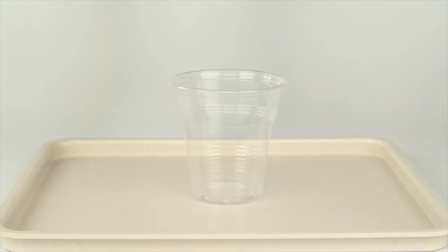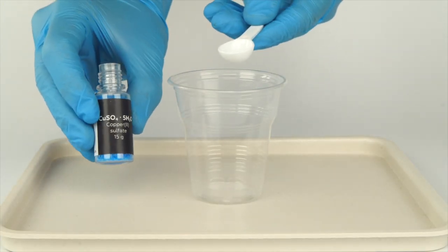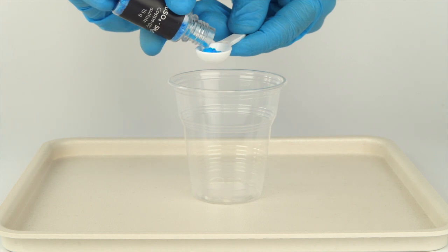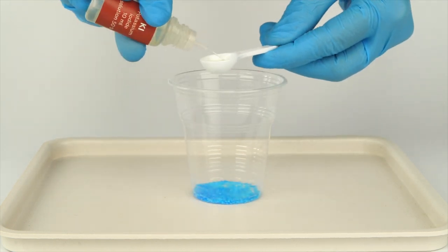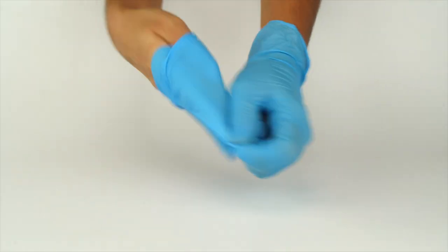Pour one big spoon of copper sulfate from the bottle with a black sticker into the plastic cup. Add one big spoon of potassium iodide solution. Take off your protective gloves.